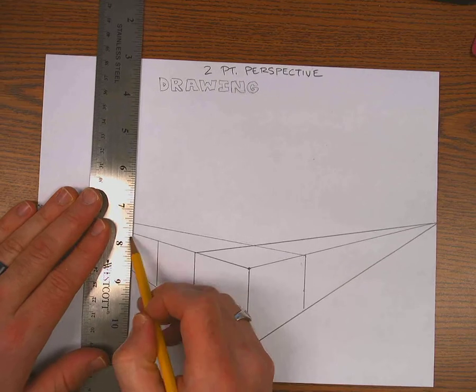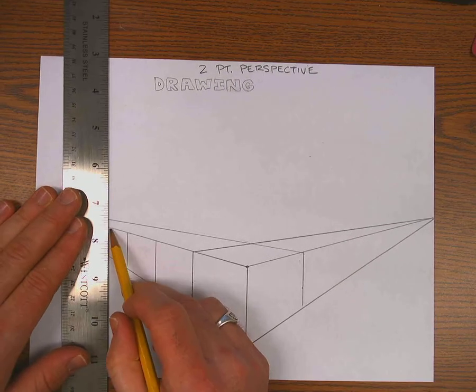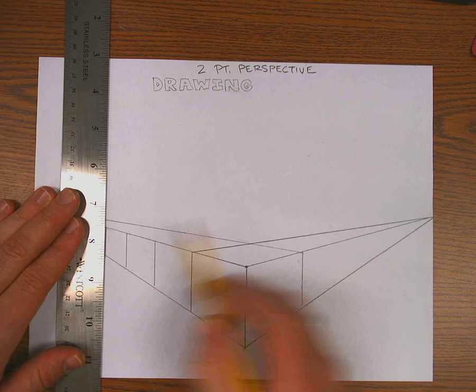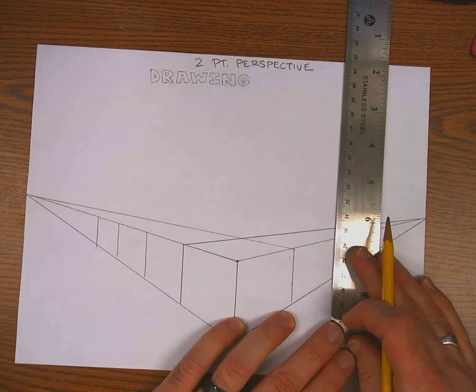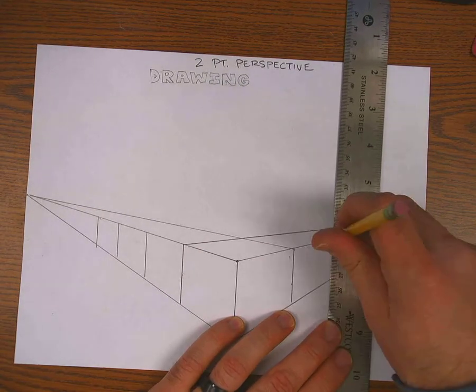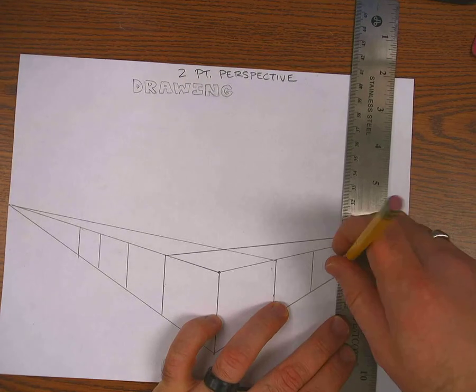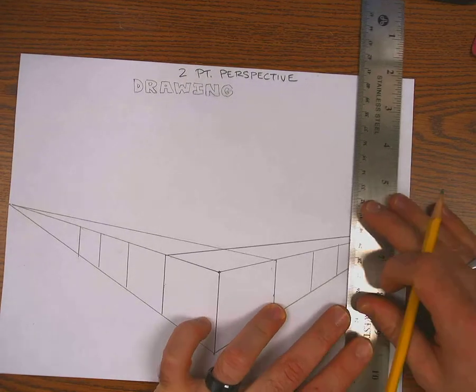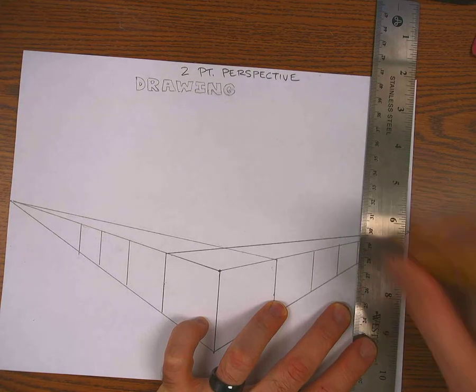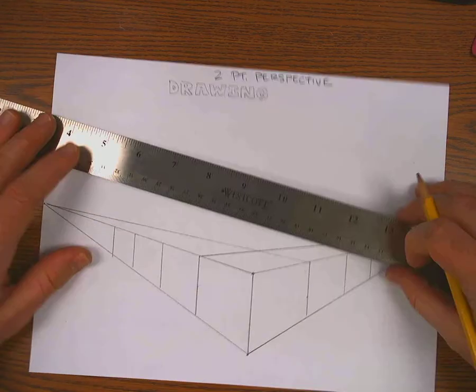So each time I draw another vertical line, it's going to get a little bit closer. It'll be a little bit closer to the one in front of it because as these recede into the distance, we want them to look like they're farther away.